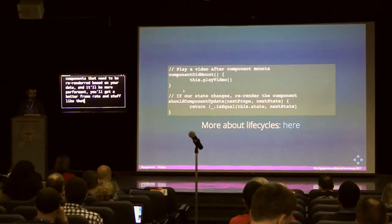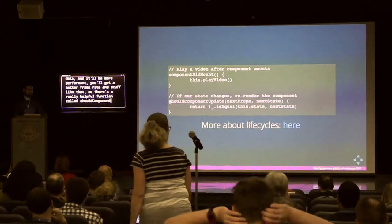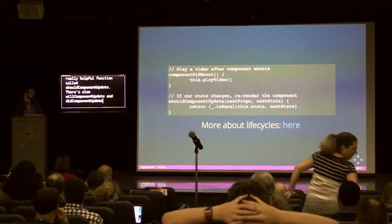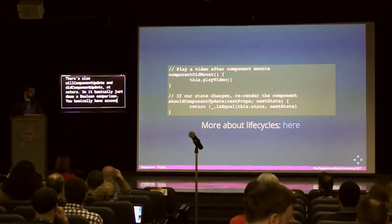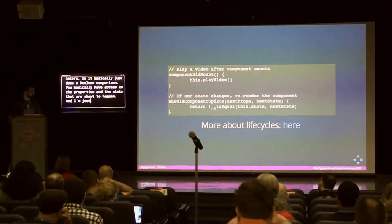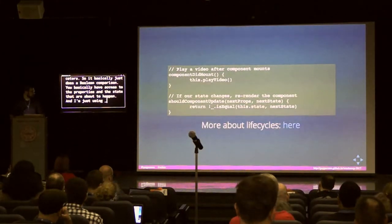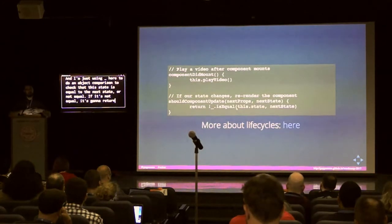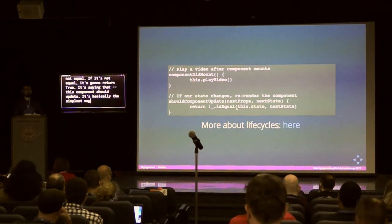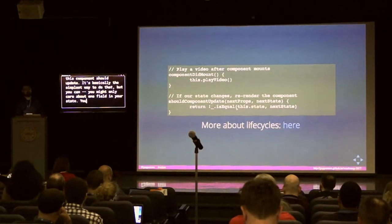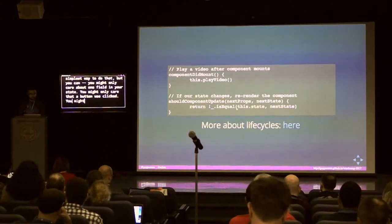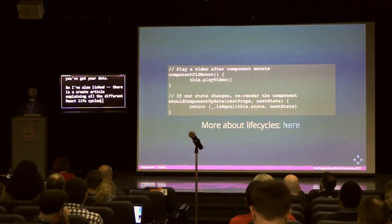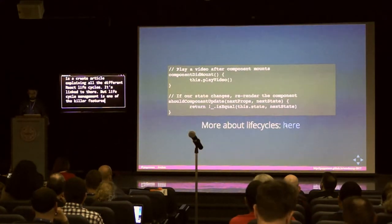There's a really helpful function called shouldComponentUpdate — it just does a Boolean comparison. You have access to the properties and state that are about to happen. I'm using Lodash here to do an object comparison to check if the current state equals the next state. If they're not equal, it returns true — meaning the component should update. You might only care about one field in your state, or just that a button was clicked. Lifecycle management is one of the killer features of React and it's really worth understanding in depth.